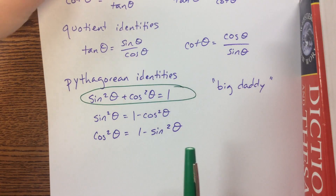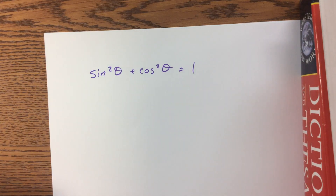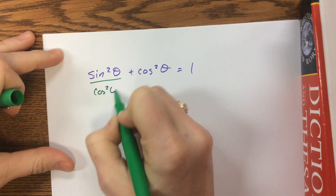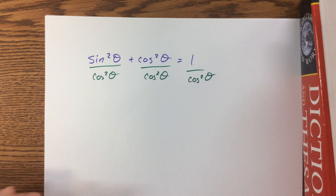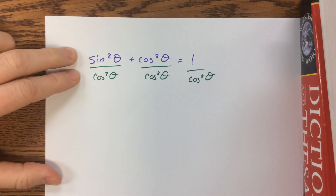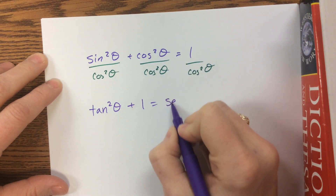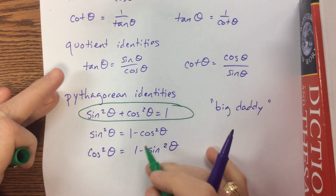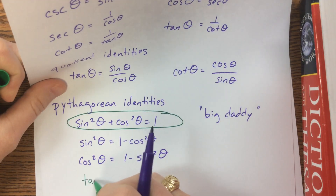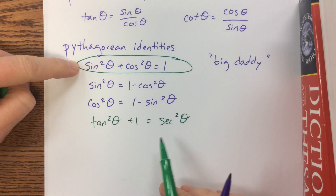There are a few more Pythagorean identities, and I like to generate them all from the big daddy. Take sine squared plus cosine squared equals one and divide everybody through by cosine squared — that's a legitimate operation. Sine over cosine is tangent, so sine squared over cosine squared is tangent squared; cosine squared over cosine squared is one; and one over cosine squared is secant squared. So: tangent squared theta plus one equals secant squared theta.